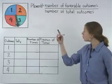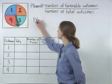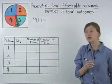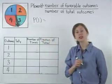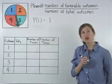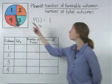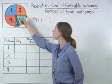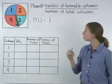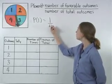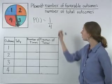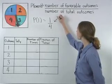For example, we can find the probability of spinning a one on the spinner shown here by noticing that there is one one on the spinner, so there is one favorable outcome. And there are four equally possible outcomes on our spinner: one, two, three, and four. So there are four total outcomes. So the probability of spinning a one is one out of four, or one-fourth. We call this the theoretical probability.